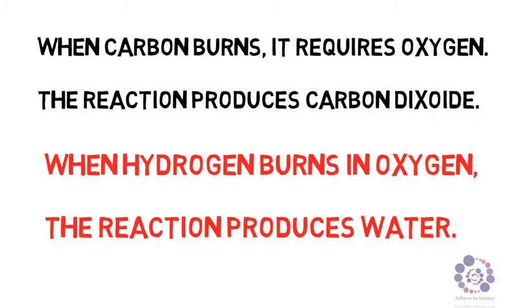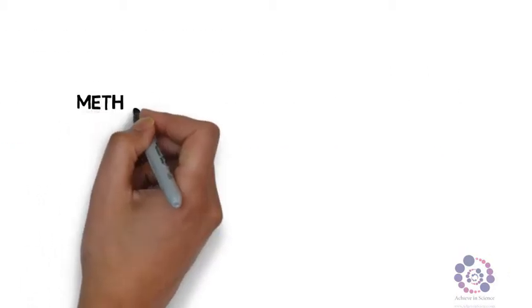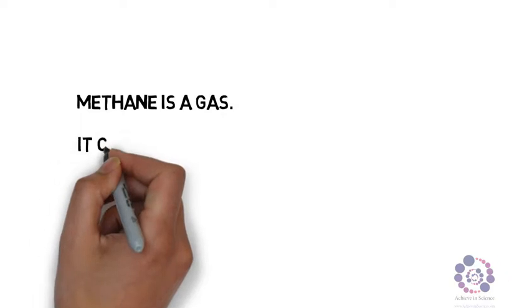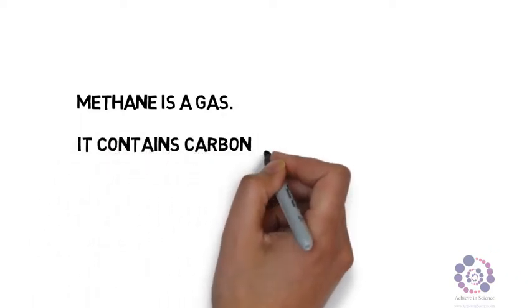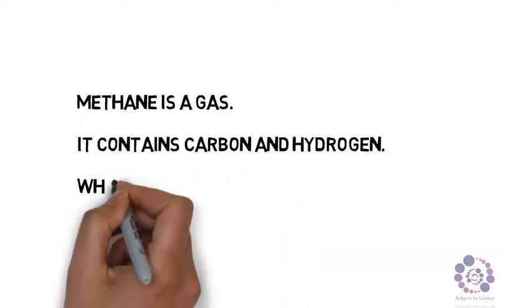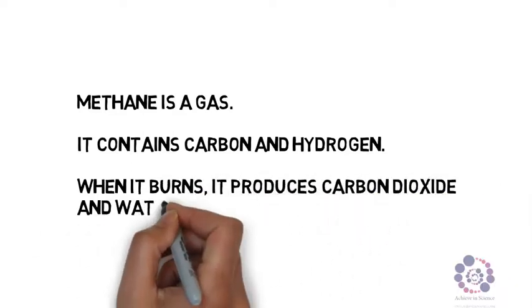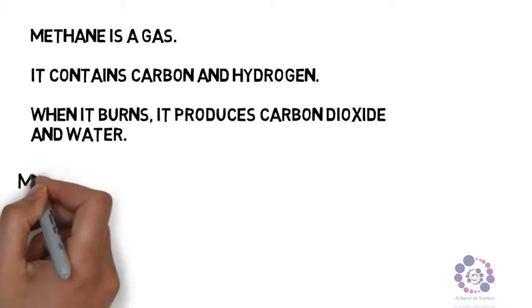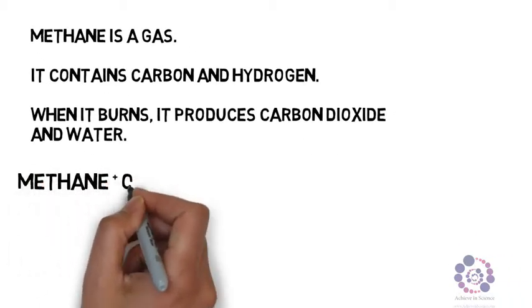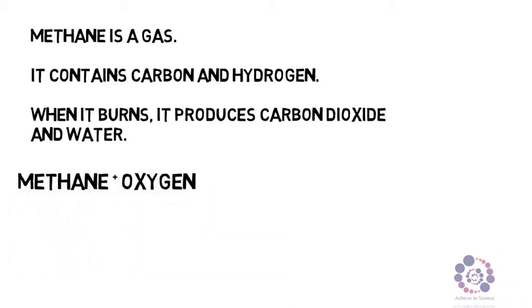Now why say this? Well, methane is a gas we use regularly and it contains carbon and hydrogen. So when it burns it produces carbon dioxide and water. Therefore this can be represented via the word equation: methane plus oxygen produces water and carbon dioxide.